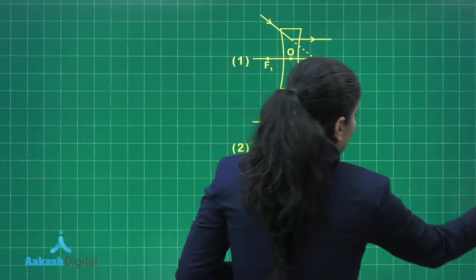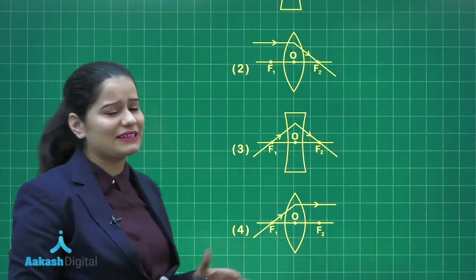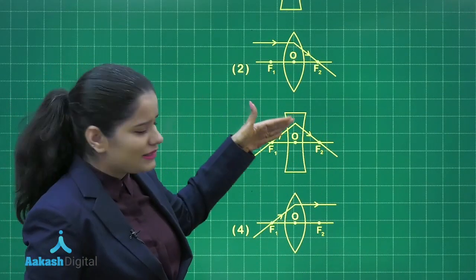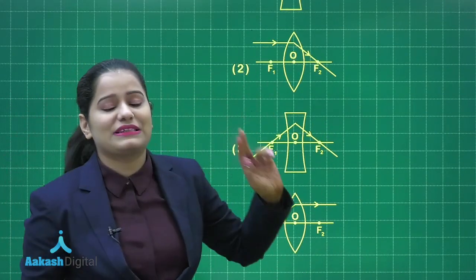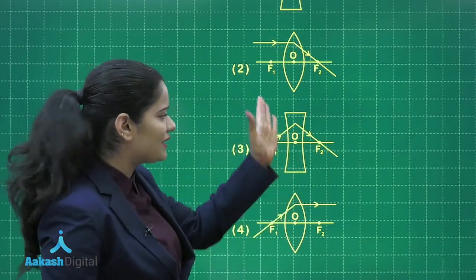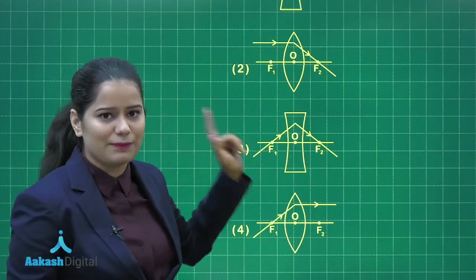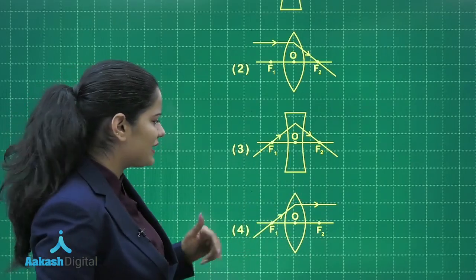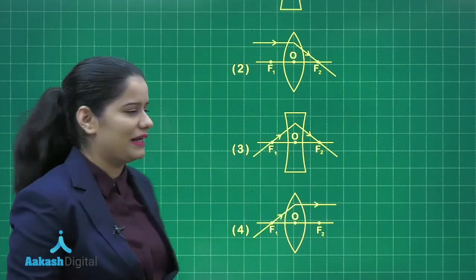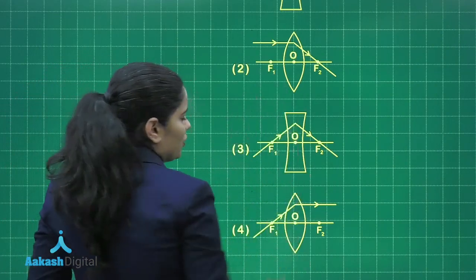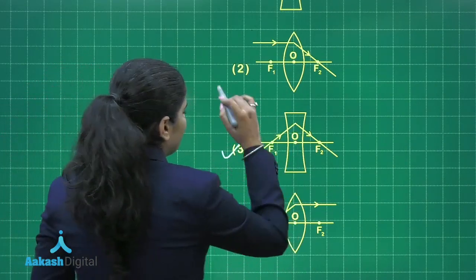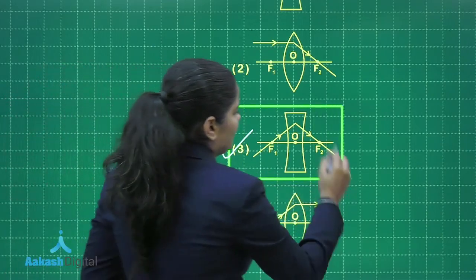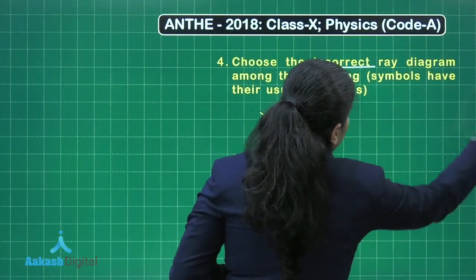Option 3 is totally incorrect — the ray passing through F1 should become parallel to the principal axis after refraction, but in this diagram it is passing through F2, so this is absolutely incorrect. Option 4 is again correct: passing through F1 it becomes parallel to the principal axis. Out of these 4 options, option 3 is incorrect, and since we need to pick the incorrect one, option 3 is the correct answer for this question.